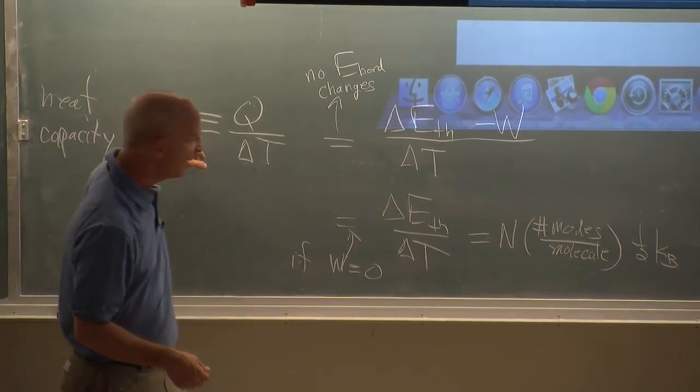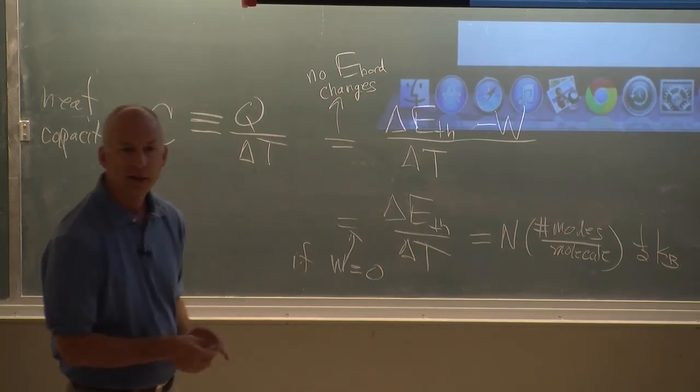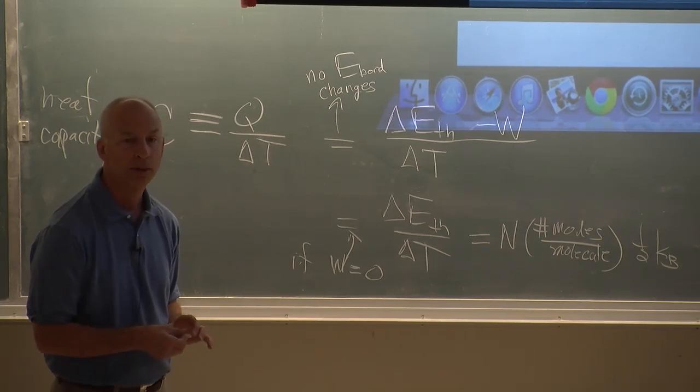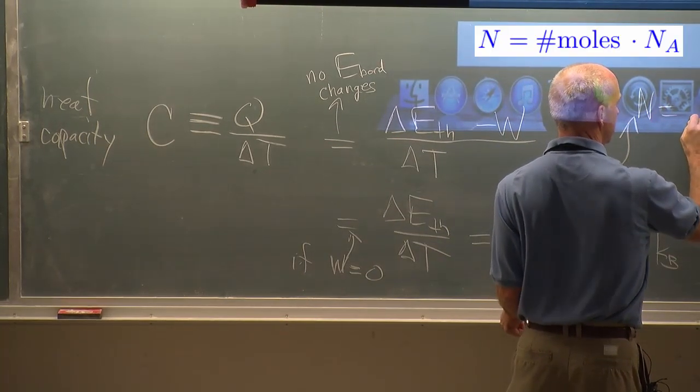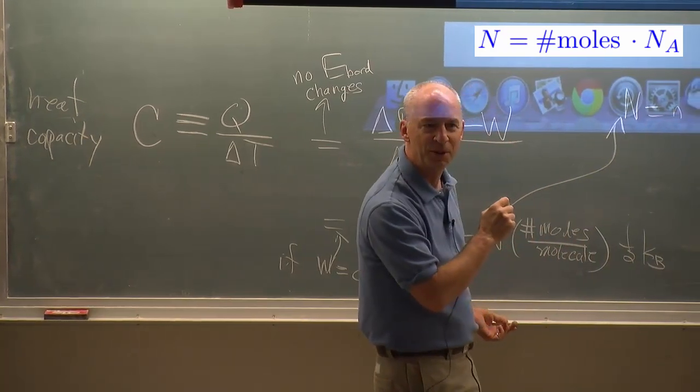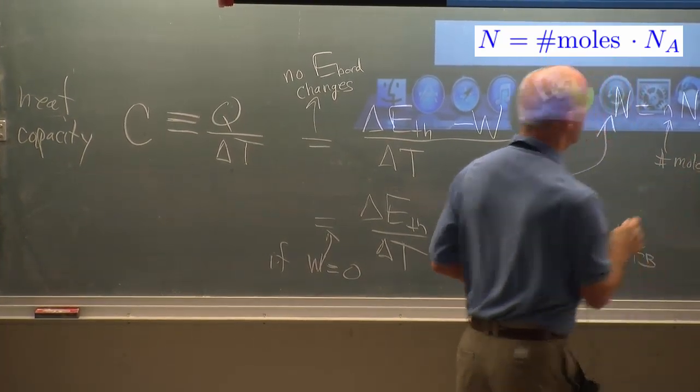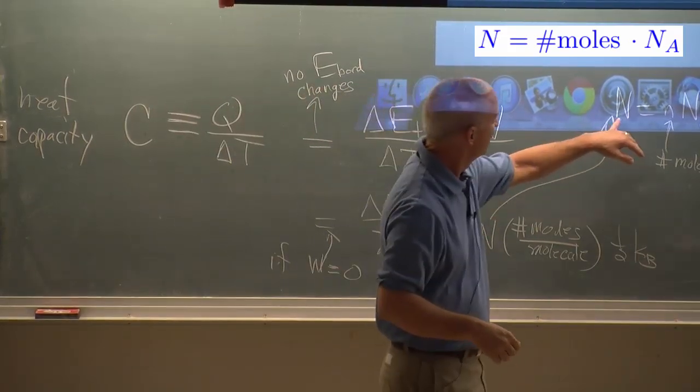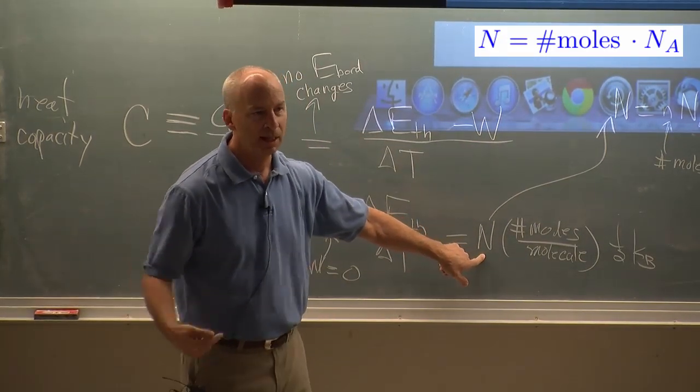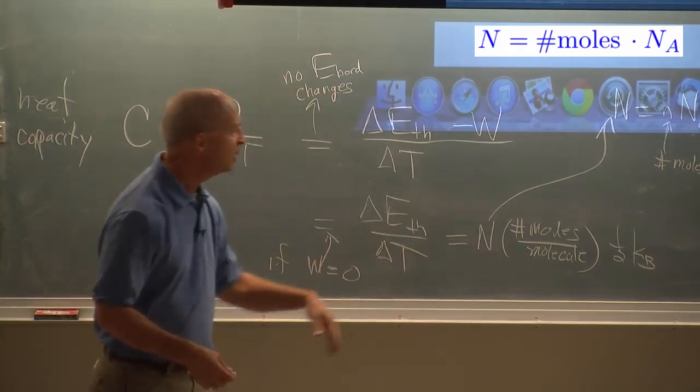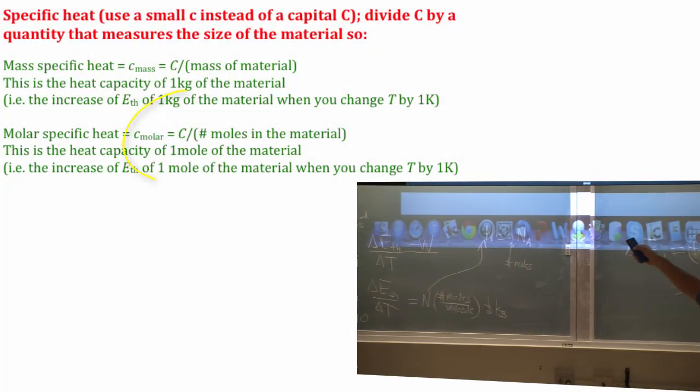If I then took C and divided by the number of molecules, then I would have the specific heat per molecule. If I turned number of molecules into, I'm not sure, what do you use for moles? N or nu? I'll use N. I can take N as capital N, the number of atoms as the number of moles times Avogadro's number, and stick that in here.